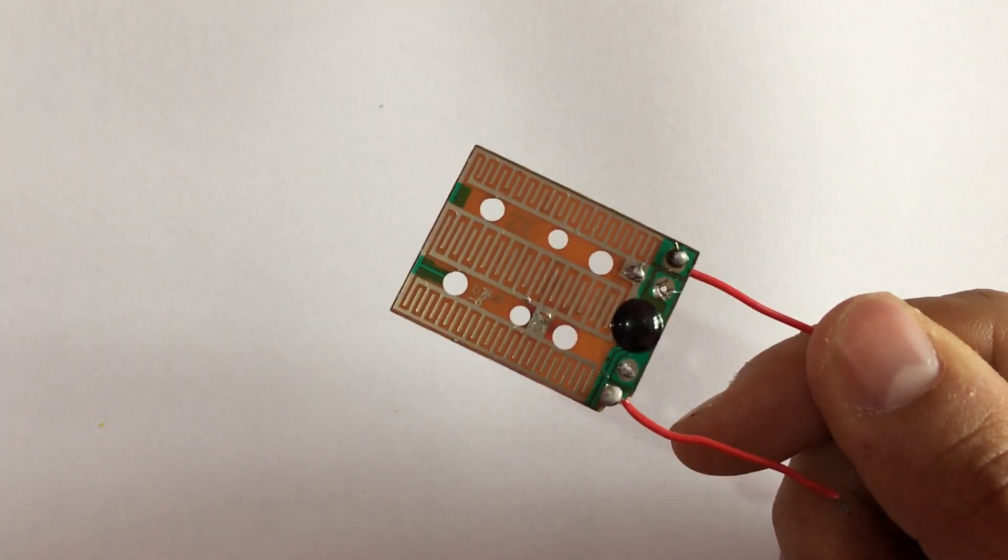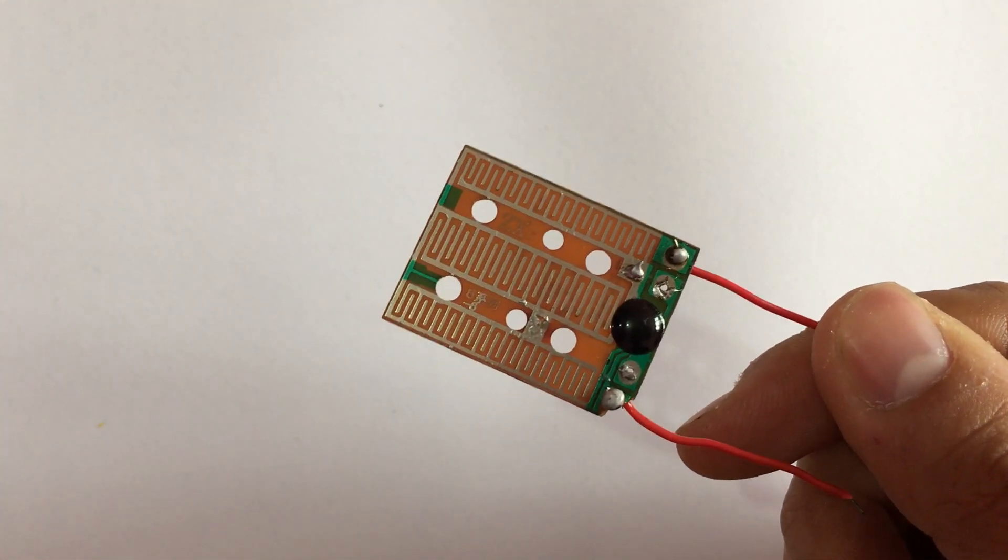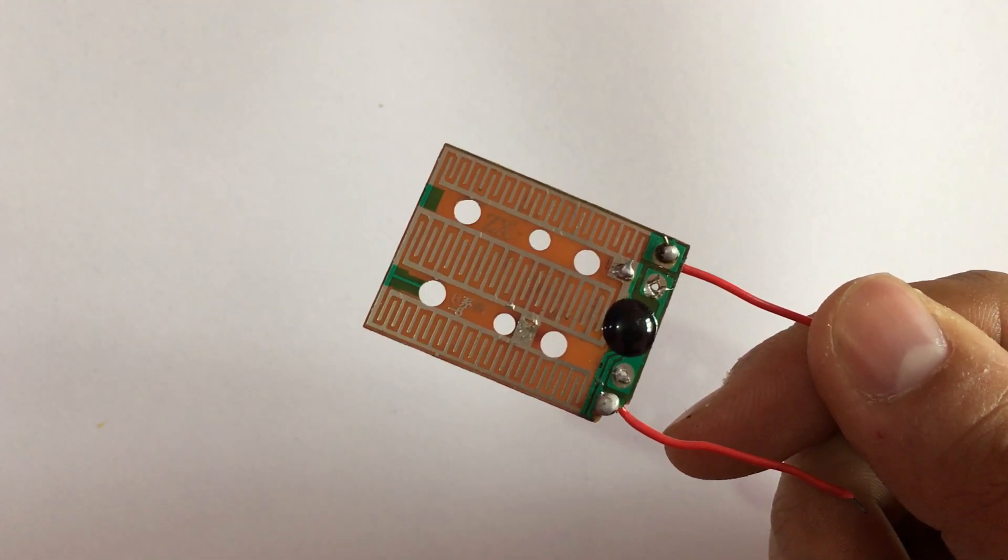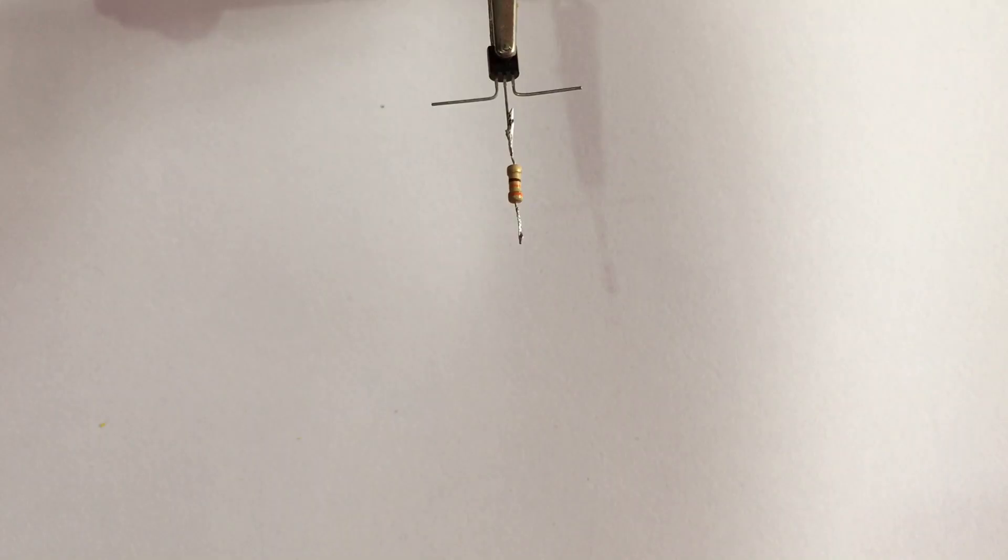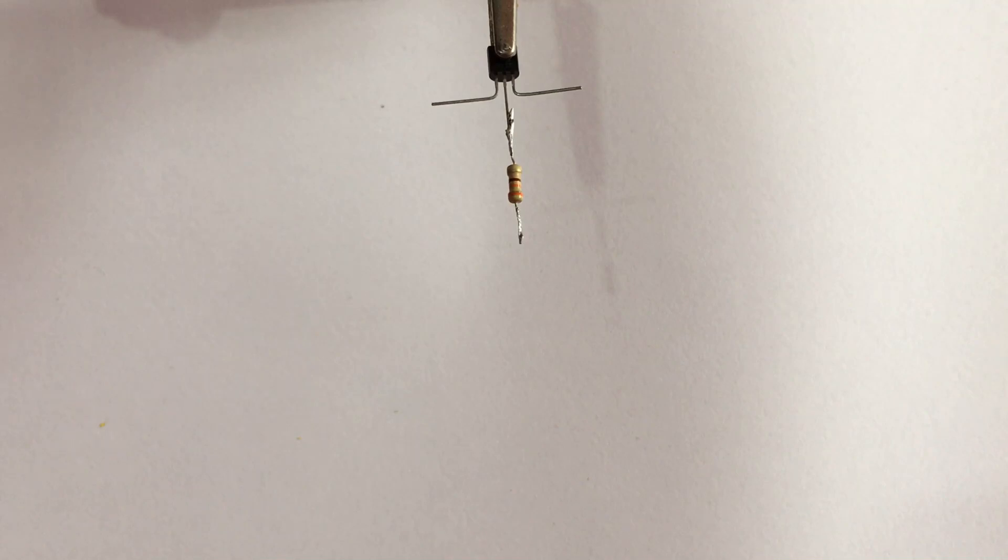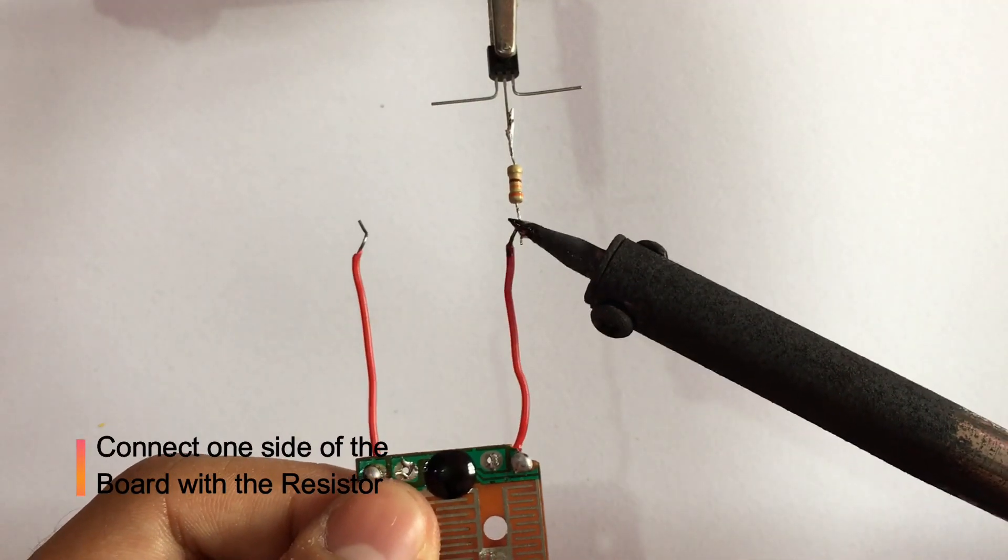I am taking a board which has two conductive sides close to each other. You can even use two naked wires putting them close to each other. Now connect one side of the board to the resistor.